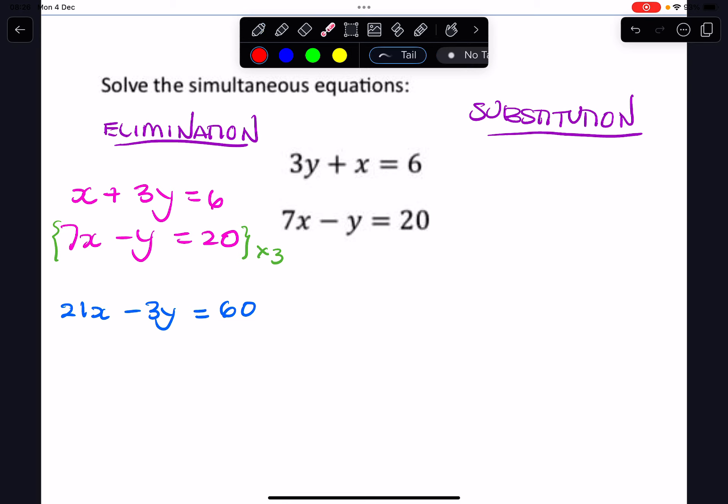And then I'll bring this equation back down here, so x plus 3y equals 6, and then I'll just add...